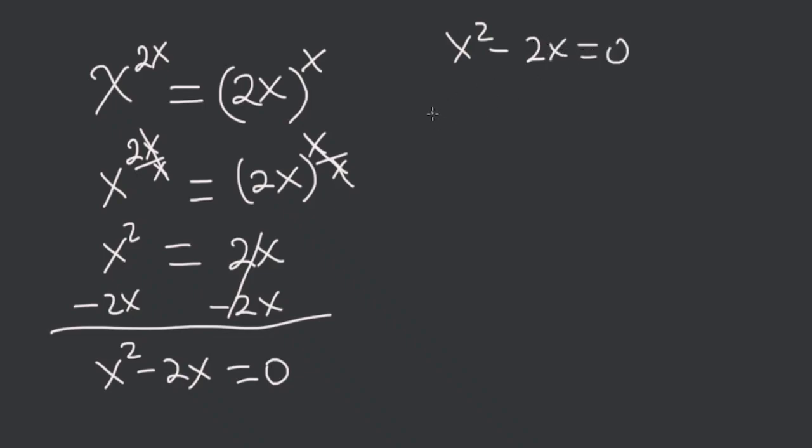Now factoring out an x, we get x times x minus 2 is equal to 0. If I multiply across, I get x squared and a minus 2x, so these two are equivalent.